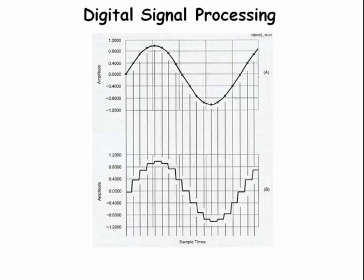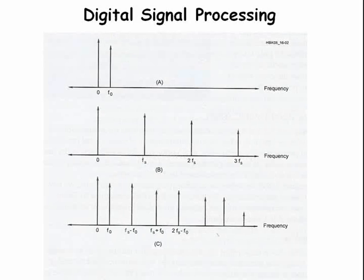Digital signal processing involves rapidly sampling analog signals, recording measurements as a series of numbers, processing those numbers, then converting the new numbers back to an analog signal. The frequency of the sine wave being sampled must be much less than the sampling frequency. The output is a complex signal including the sum and difference signals around each of the sampling signal spectrum elements, as well as that of the sine wave being sampled.